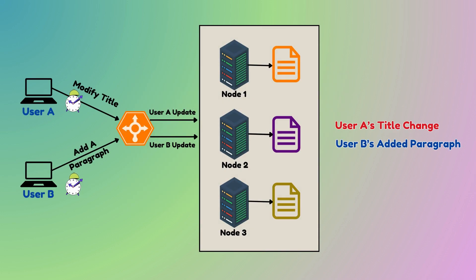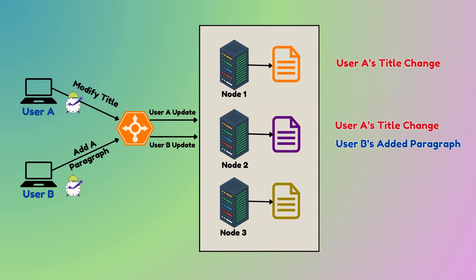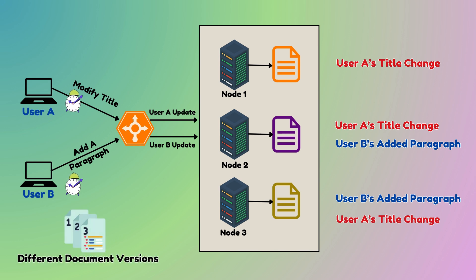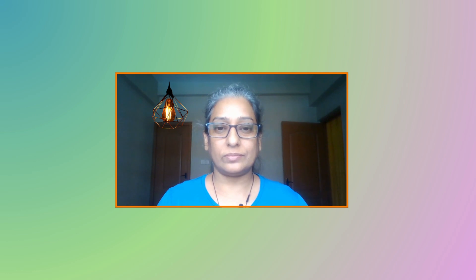Node 2 would have the document version with User B's paragraph as the final change. Node 1 might only have User A's title change. Node 3 would have a version that prioritizes User B's change over User A's, leading to different document versions across nodes. So how can we fix this? That's where vector clocks come in.